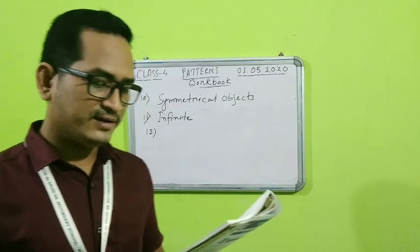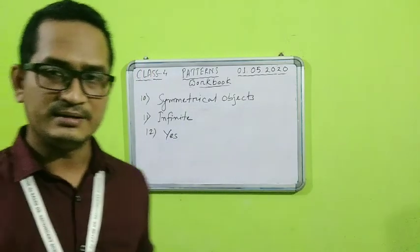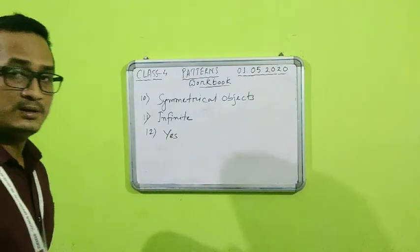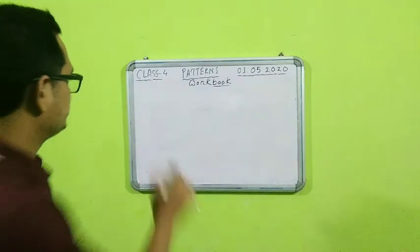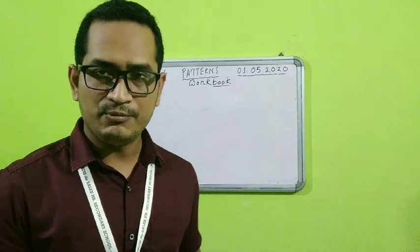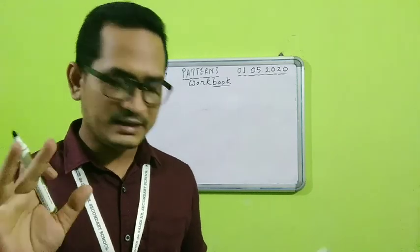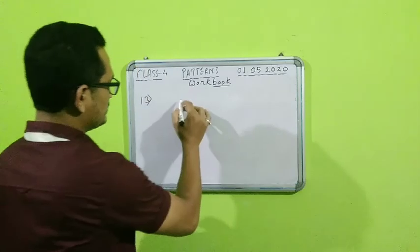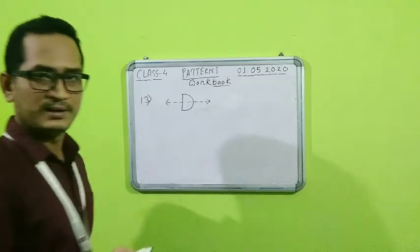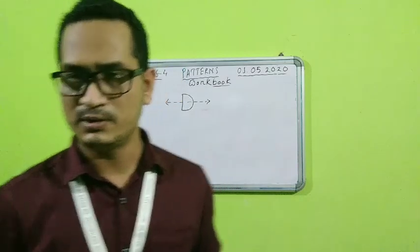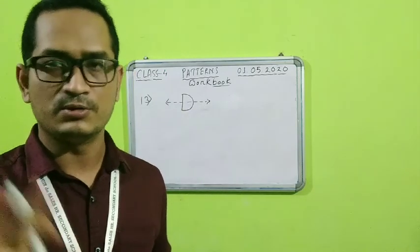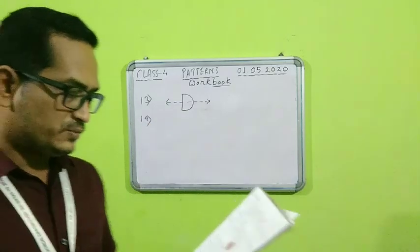Number 12: does a line of symmetry divide any figure into exact halves? Yes, because the line of symmetry divides any figure into two identical equal halves. So the answer is yes. Number 13: short answer question — draw an object with a horizontal line of symmetry. I will draw the capital letter D. The letter D can be divided only through a horizontal line of symmetry, because vertically both halves would not be equal. So capital letter D has a horizontal line of symmetry.